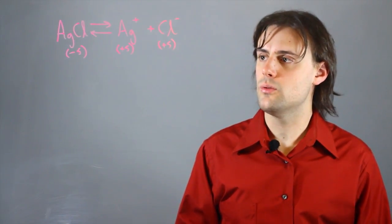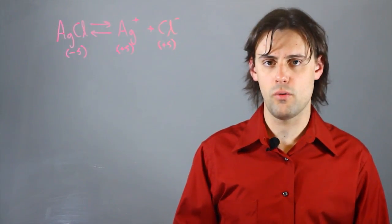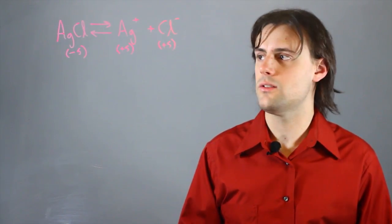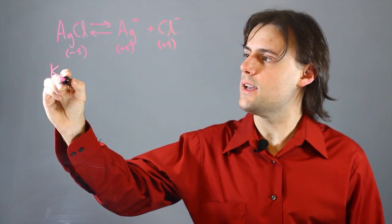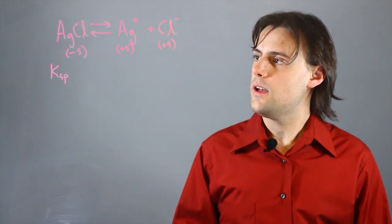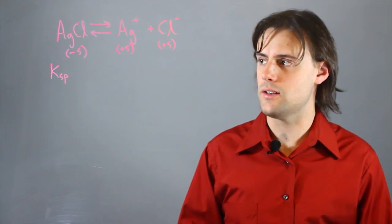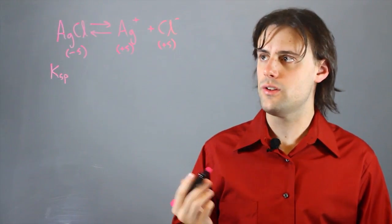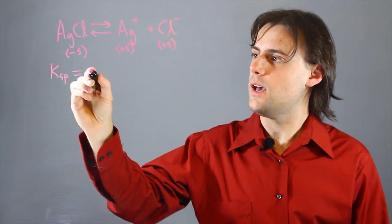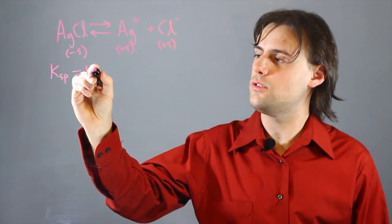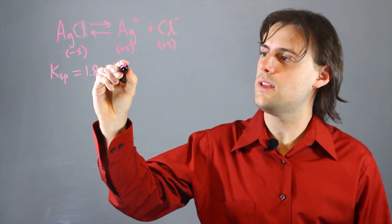When it comes to determining solubility, we need to first determine what the solubility product is, and that's usually denoted by Ksp. For different types of reactions, there are different values of Ksp. For this particular reaction, you would have to look it up on a table, and it's equal approximately to 1.8 times 10 to the minus 10.